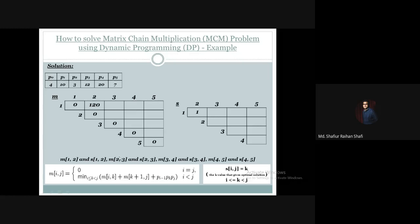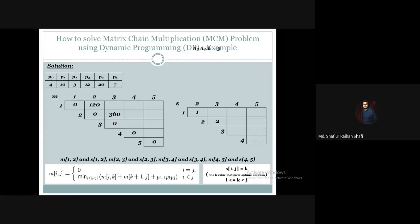M23 represents A2 multiplied by A3, and the k value is 2. Calculating: M23 = M22 + M33 + P1 × P2 × P3. M22 and M33 are both 0, so we compute 10 × 3 × 12 = 360. So M23 = 360, and S23 = 2.